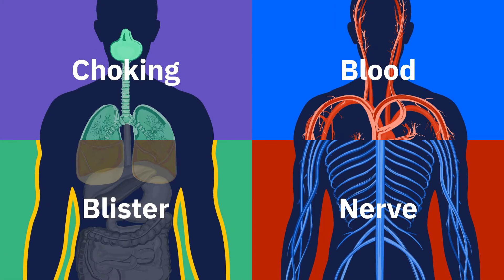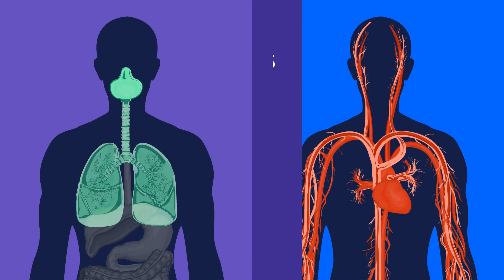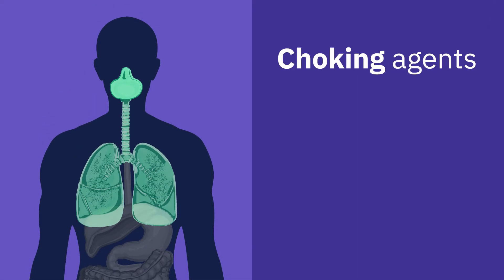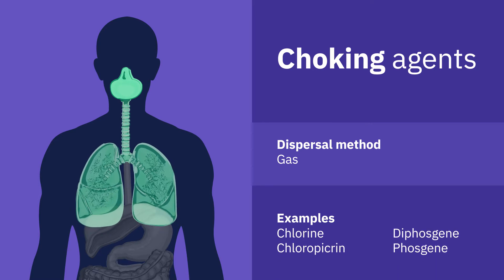There are four types of chemical agents used in chemical weapons, and each one affects the body in a different way. Choking agents mainly inflict injury on the respiratory tract, irritating the nose, throat and especially the lungs. When inhaled, these agents cause air sacs in the lungs to secrete fluid, essentially drowning those affected.